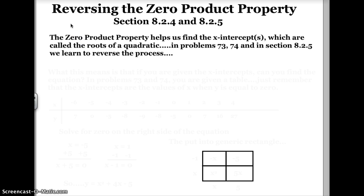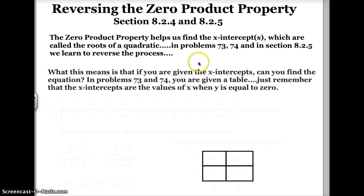The zero product property helps us find the x-intercepts of a parabola, or a quadratic. These x-intercepts are called the roots of a quadratic. Now in Problem number 73, what it means is if you're given the x-intercepts, can you find the equation. In Problems number 73 and 74, you're given a table.